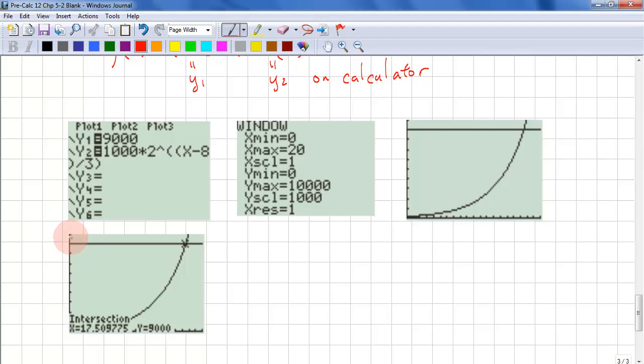So if we plot this, we get this. Then we use the intersection function and we get an answer of 17.509. So we'll round this off. And the answer is 17.51 hours. Or if it asks you for rounded hours, you would round up to 18. Otherwise you wouldn't have 9,000 bacteria. And make sure you use intersection and not intercepts.